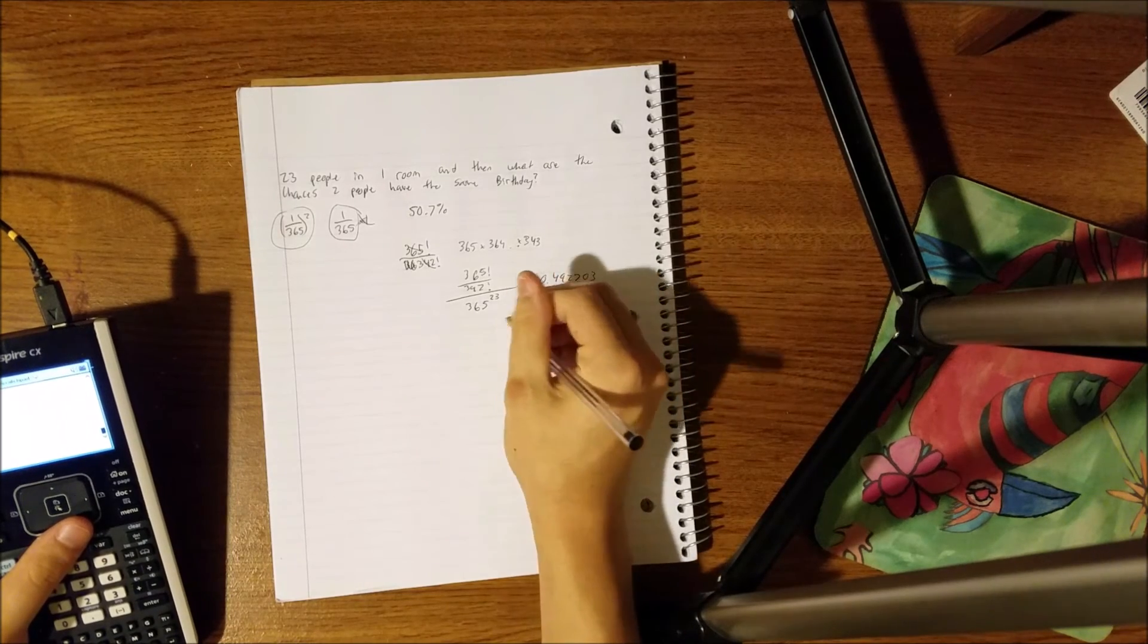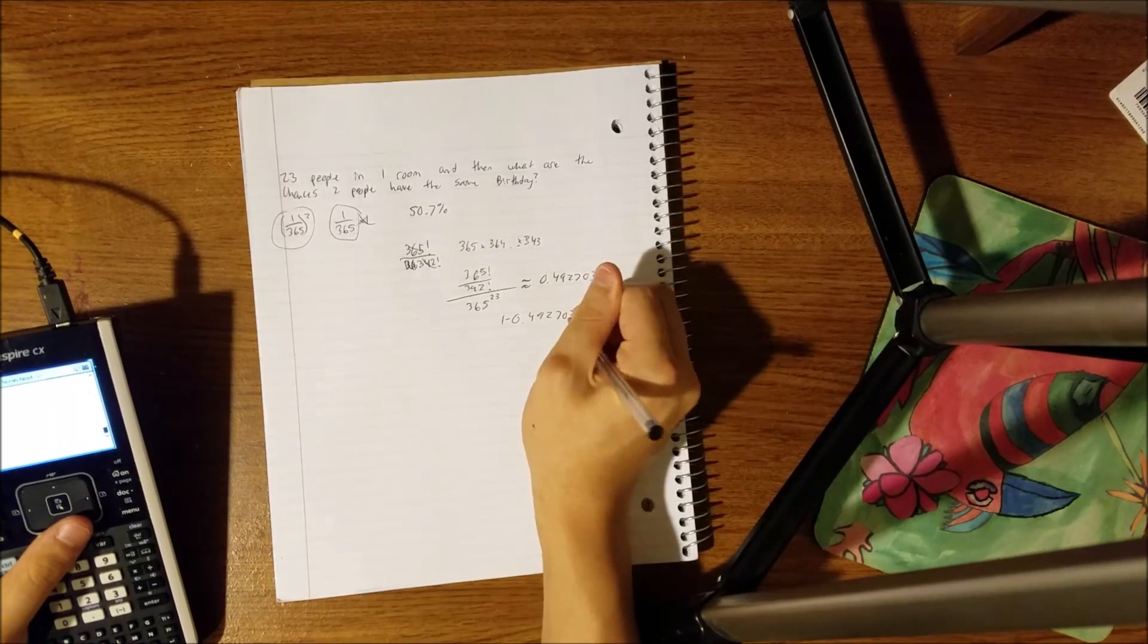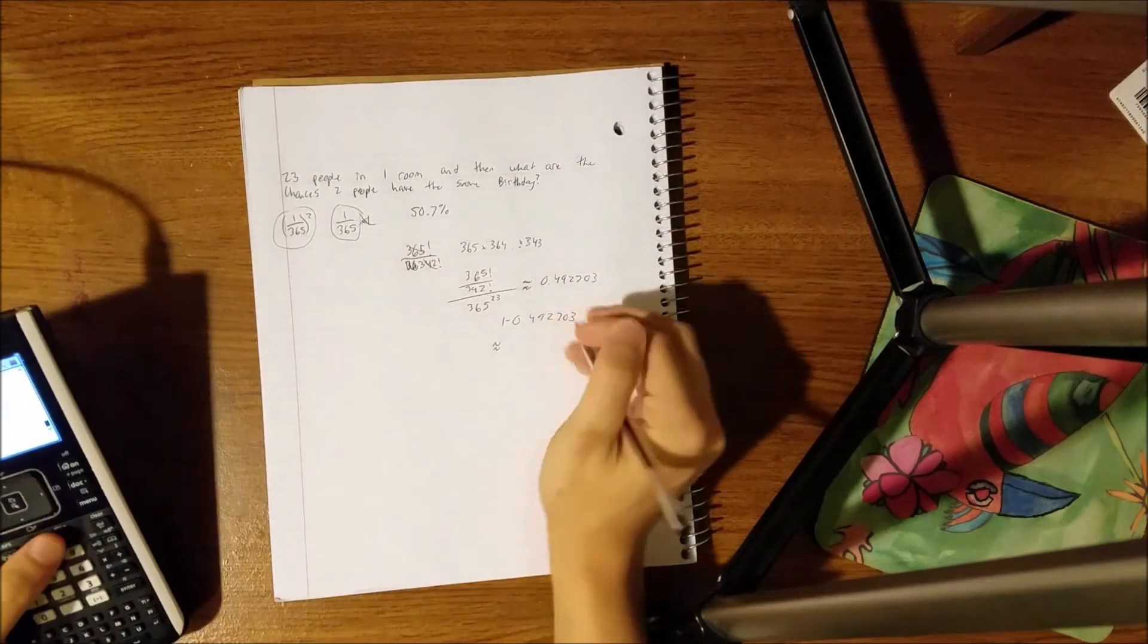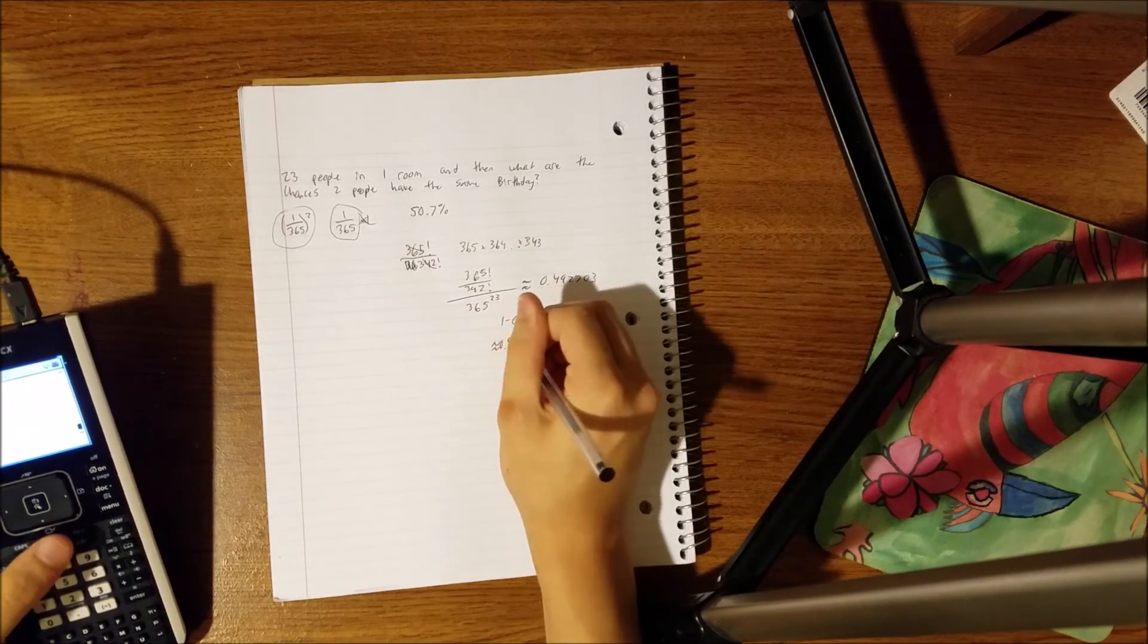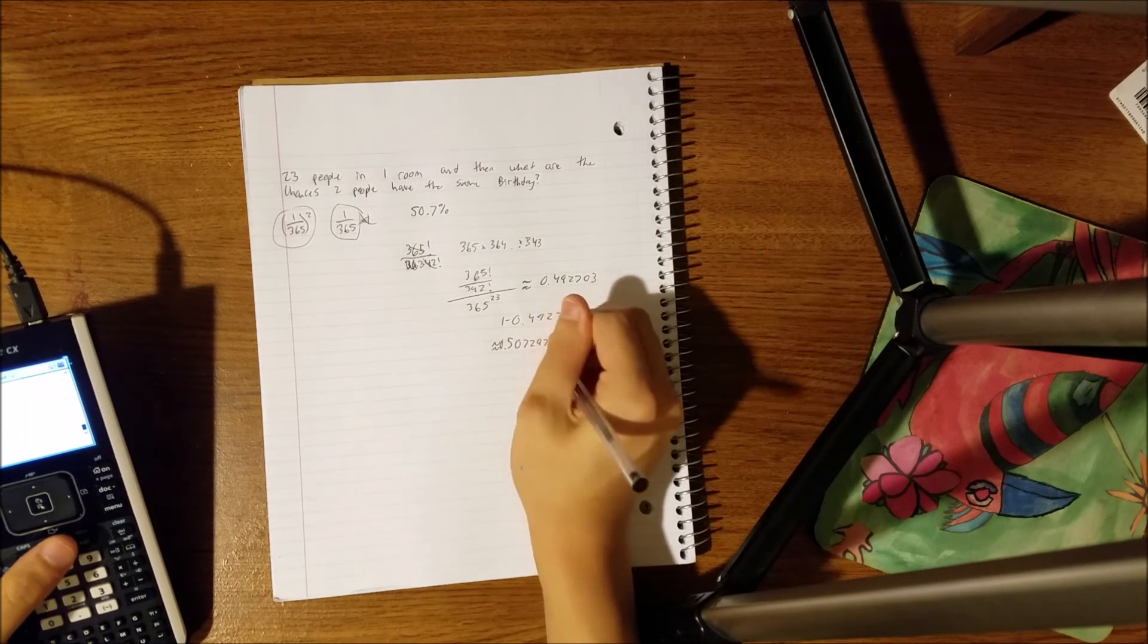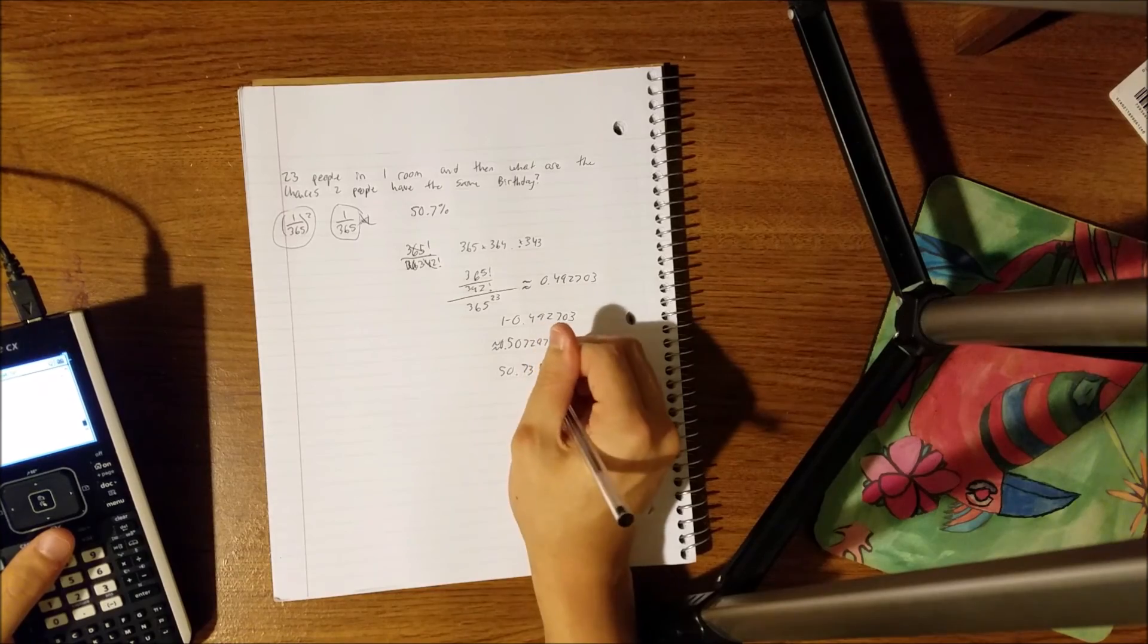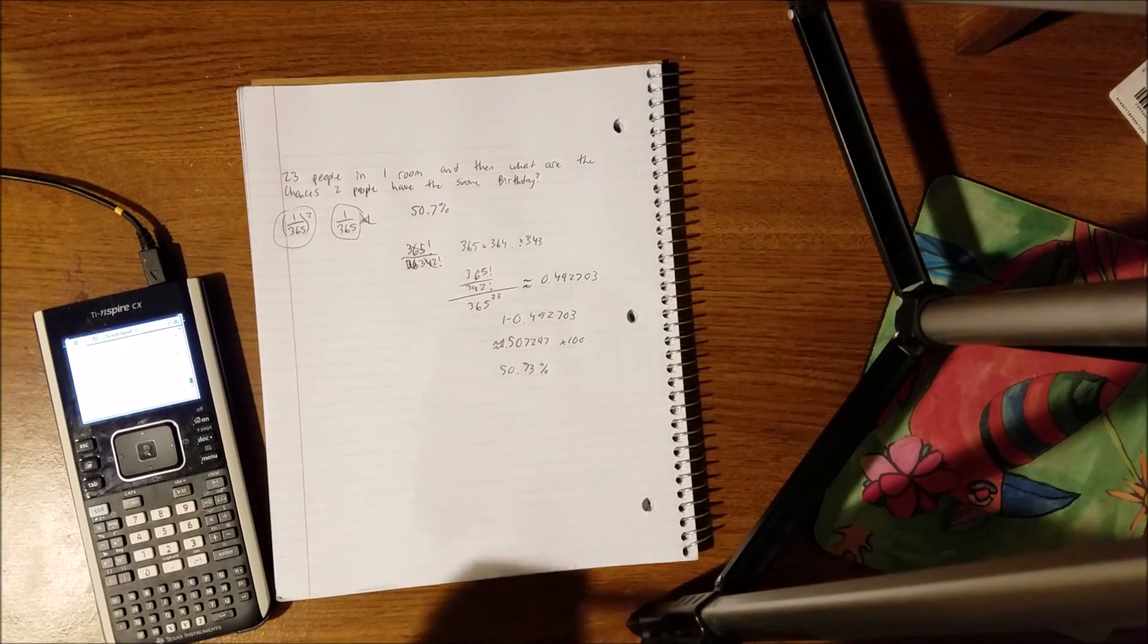and you have to do 1 minus that now, so 1 minus 0.492703 is going to give you about 0.507297. This in a percent, you times that by 100 to give you a percentage, and that's about 50.73%.